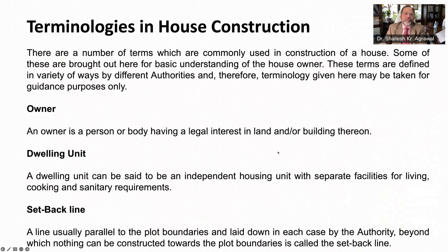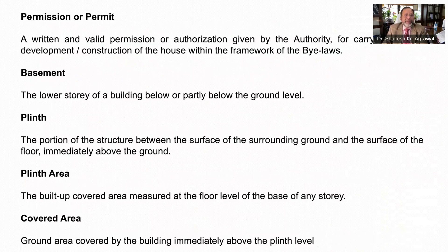This completes the first part on procedures. Now let us discuss different terminologies commonly used in house construction. These are quite common terms, defined in a variety of ways by different authorities and vary from place to place; however, we are explaining them for guidance purposes. Owner: an owner is a person or a body having a legal interest in land or building. Dwelling unit or house is an independent housing unit with separate facilities for living, cooking, and sanitary requirements. Setback line is the most important boundary which is parallel to the plot boundary and laid out by the authority beyond which nothing can be constructed. Building permission or permit is a written and valid permission given by the authority for carrying out construction or development.